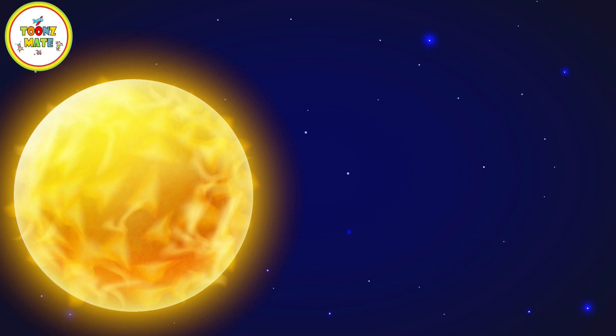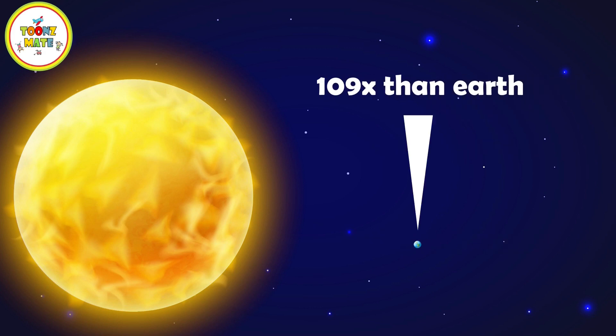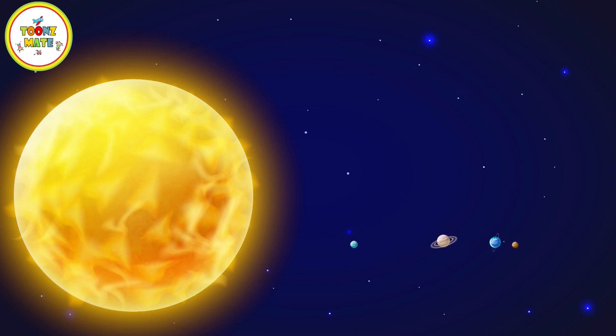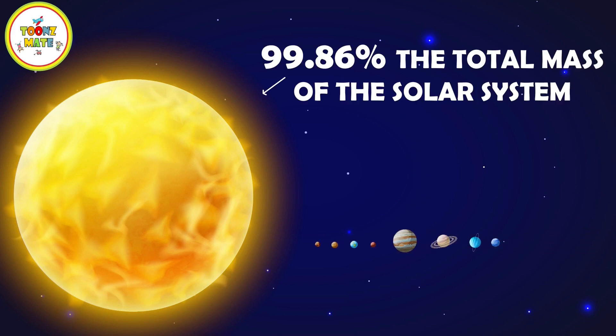The Sun's diameter is approximately 109 times the diameter of the Earth. It is so massive that it accounts for about 99.86% of the total mass of the solar system.